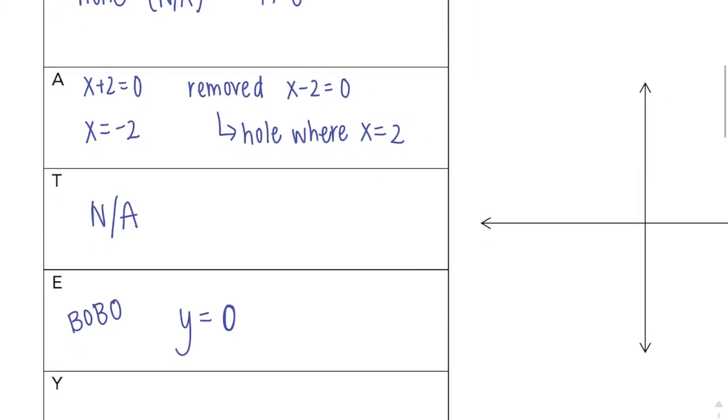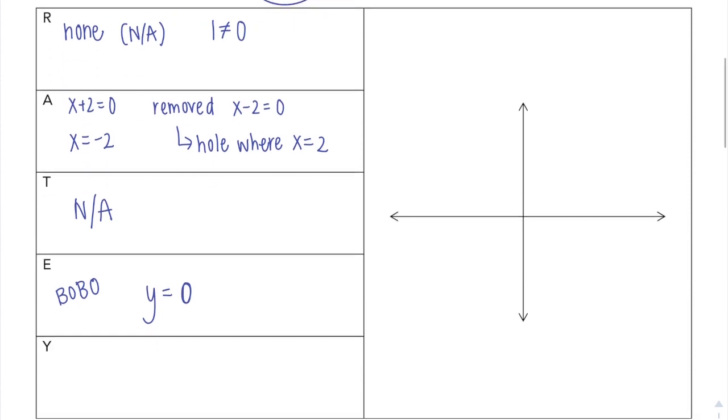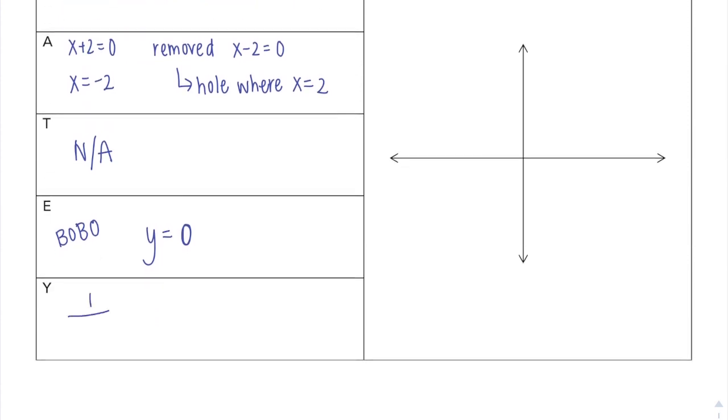And then Y stands for y-intercept. Plug in 0 for x into this one. So I'm going to have 1 over 0 plus 2. So my y-intercept is going to be 1 half.